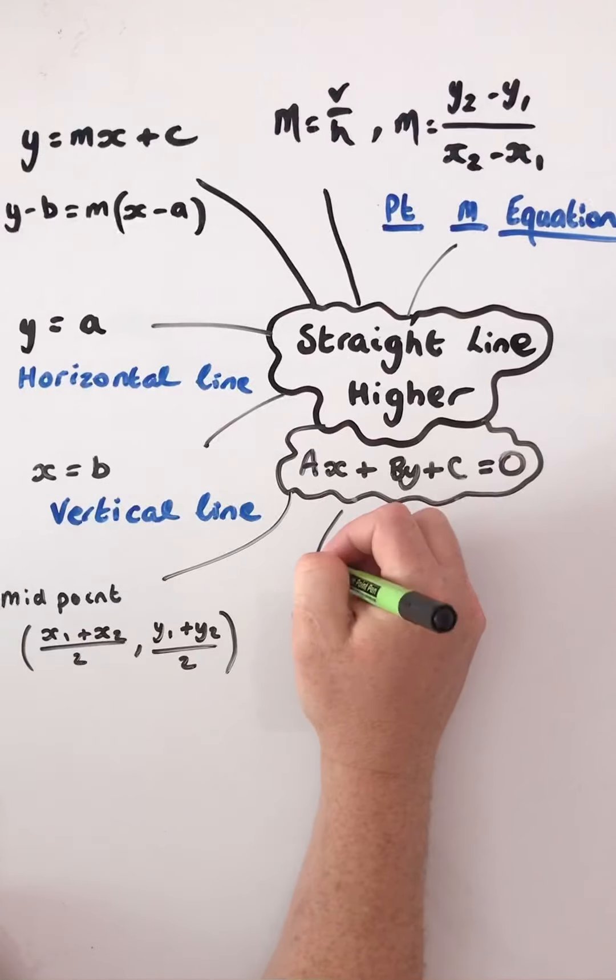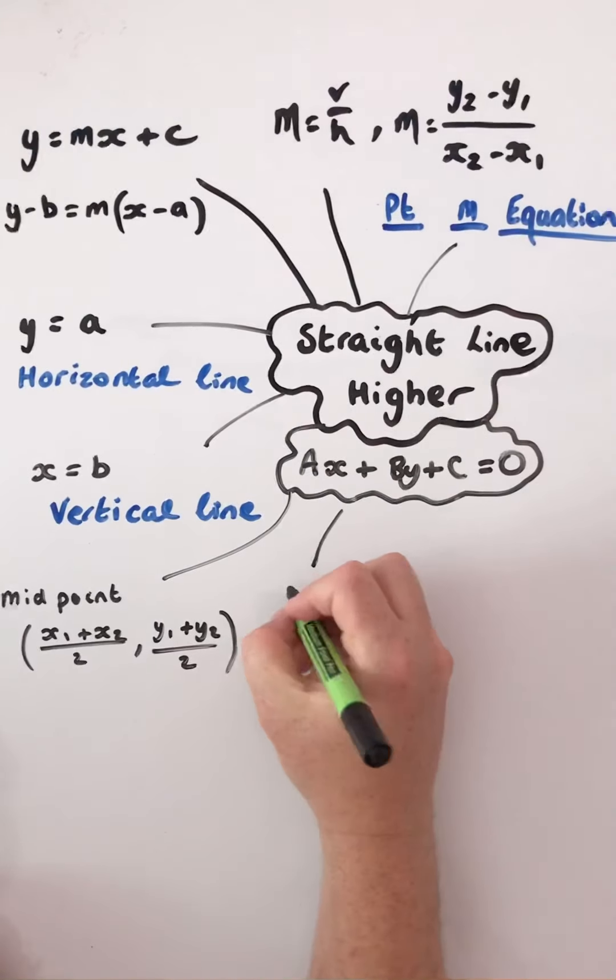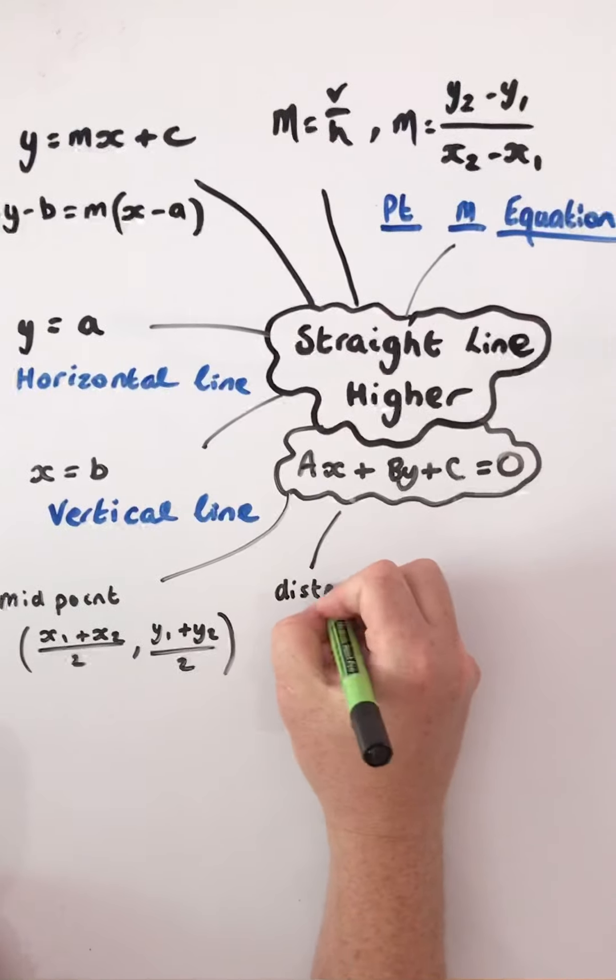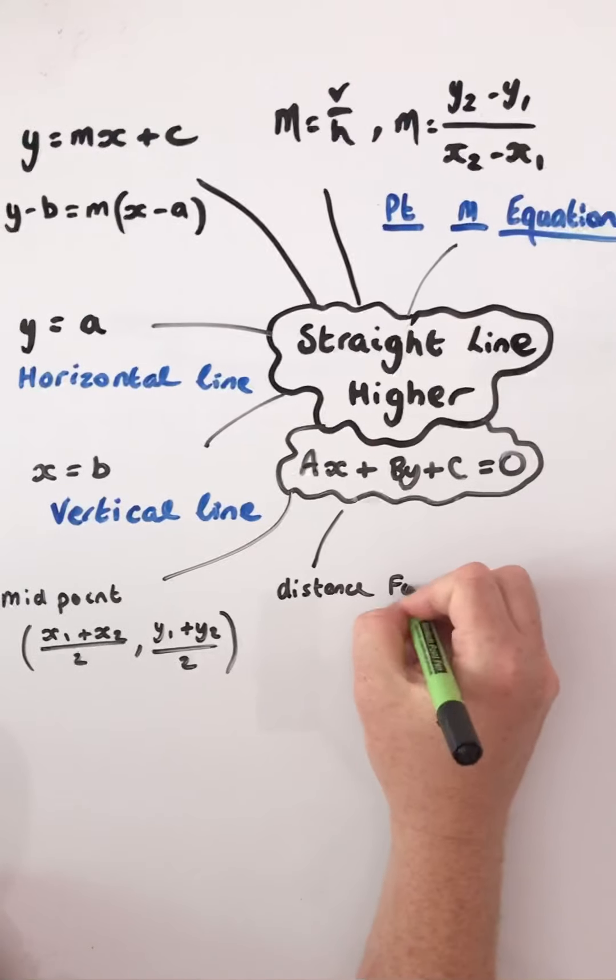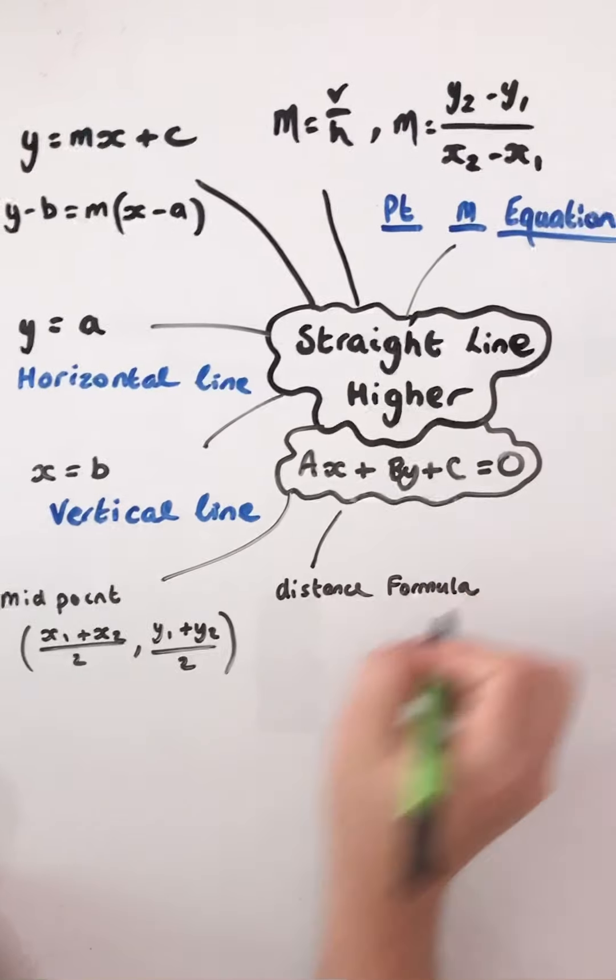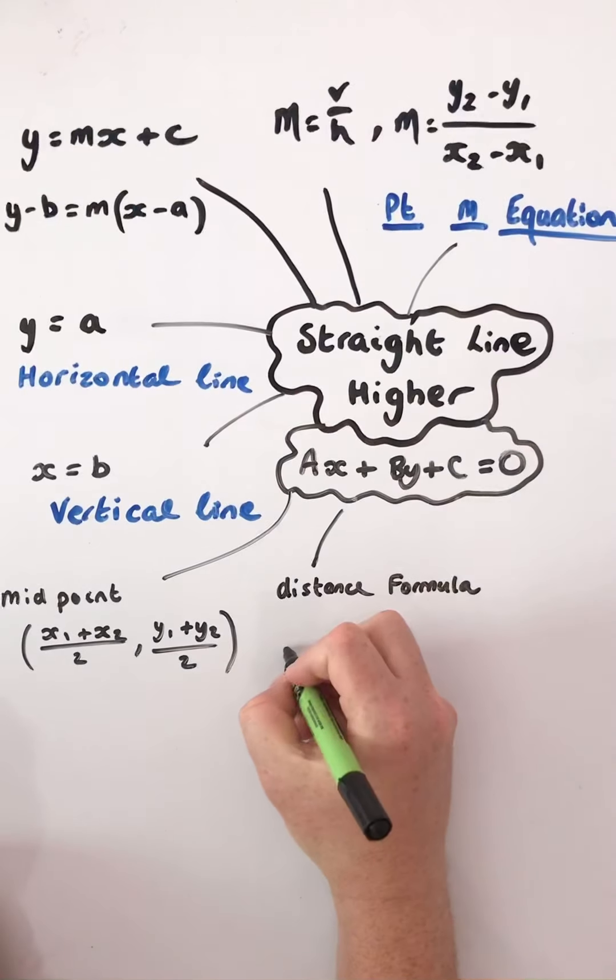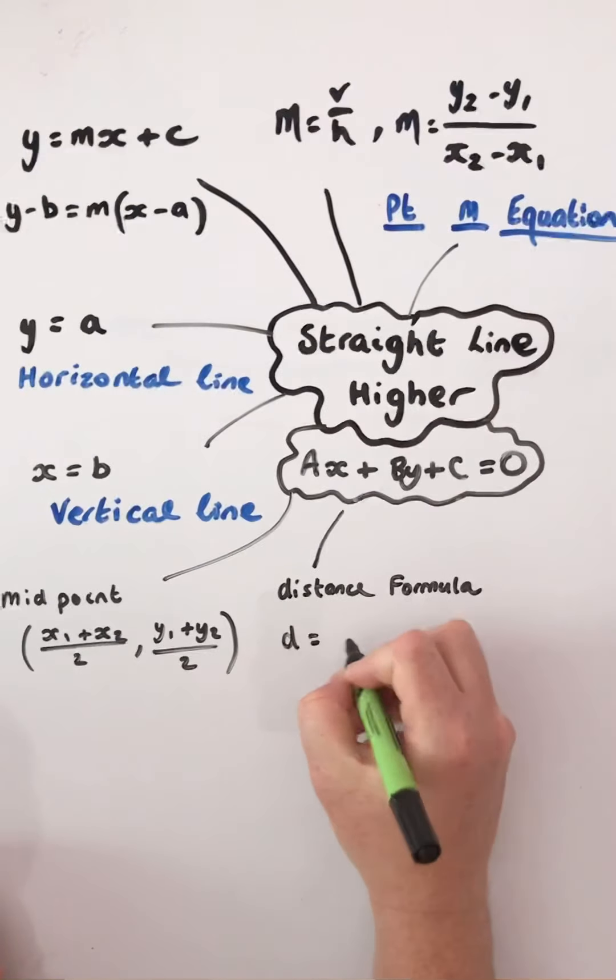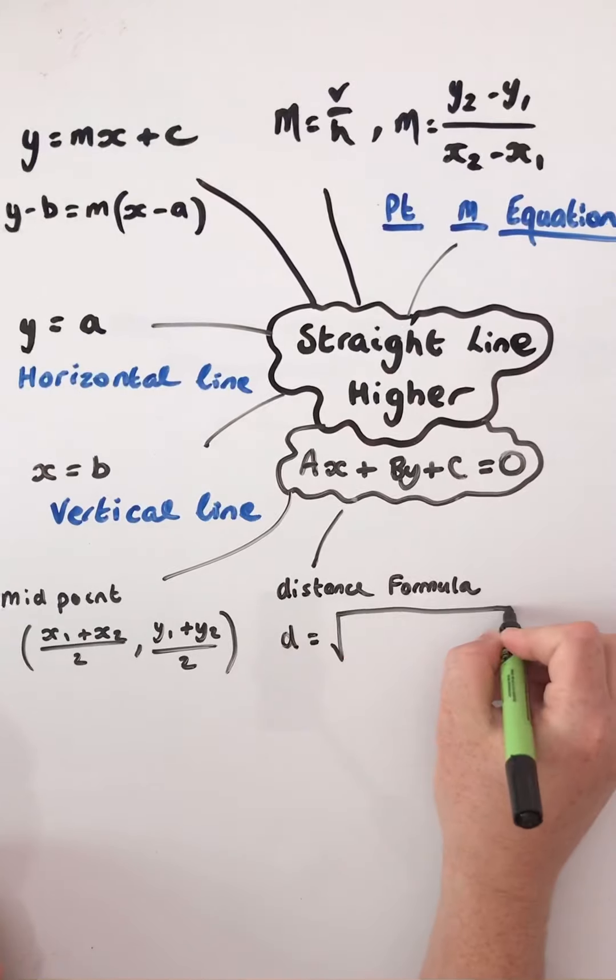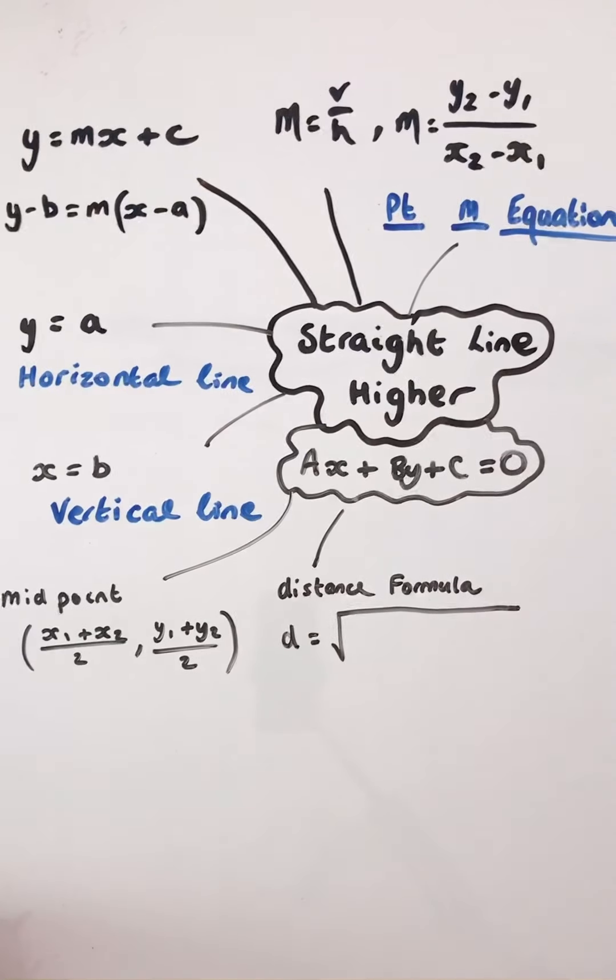You'll also meet, again, if you haven't met it already in your third year, your distance formula. Again, using and given two coordinate points, now this is just Pythagoras.